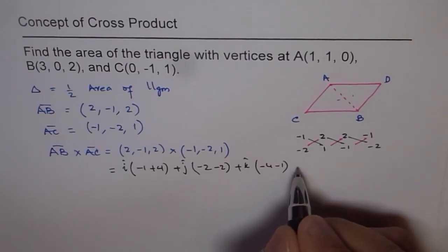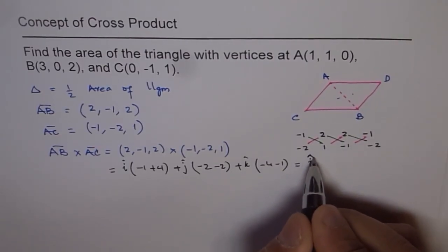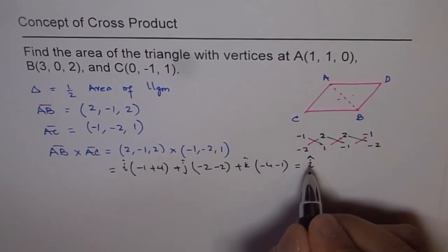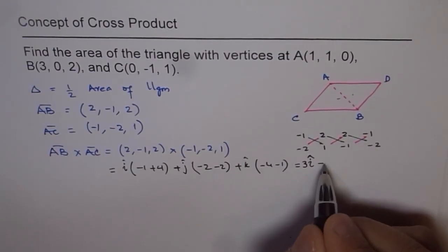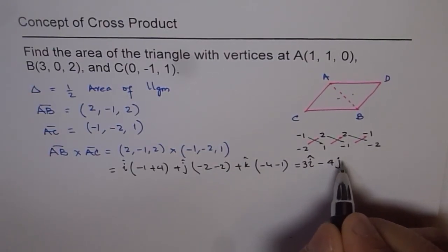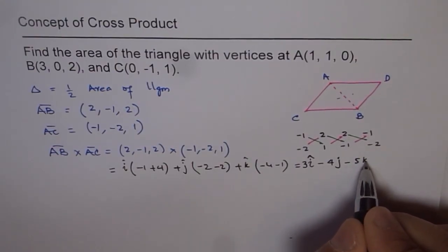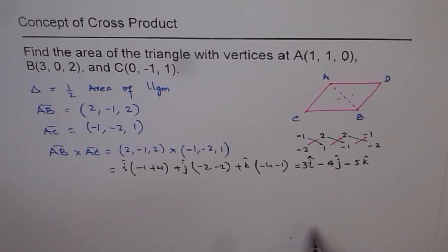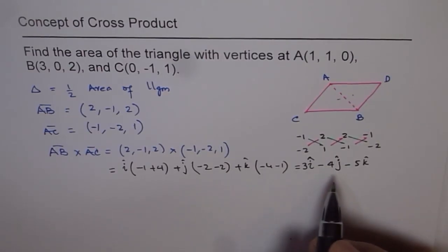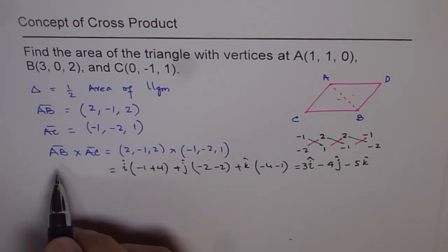So we get this as equal to i is 3, it is limited 3i, and j component is minus 4, minus 4j, and k component is minus 5, so minus 5k. So these are our components.